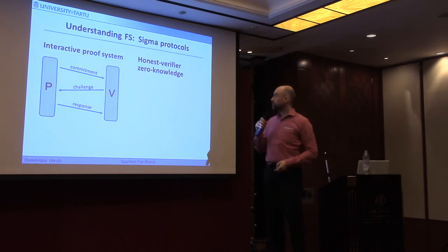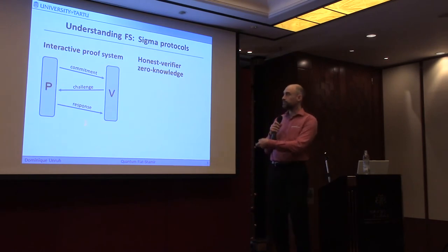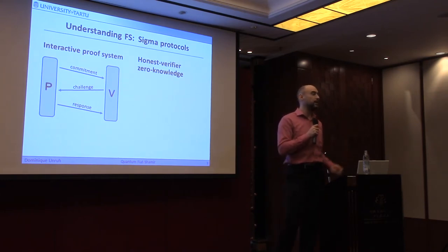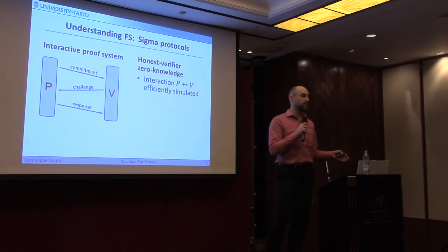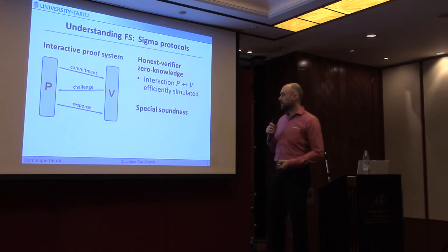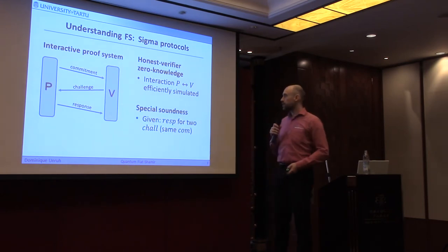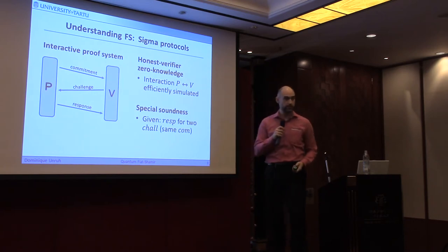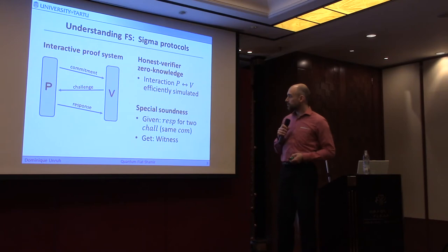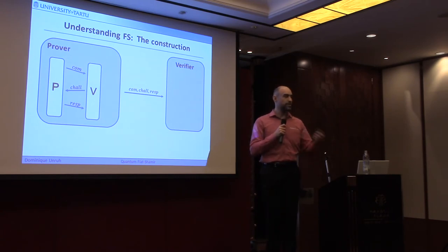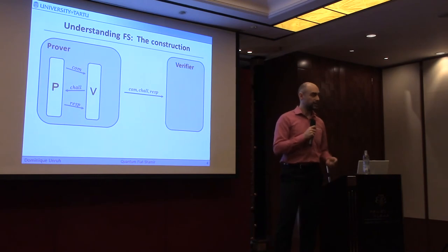We require two properties of such a proof system. The first is honest verifier zero knowledge, meaning whatever happens between an honest prover and verifier could be efficiently simulated by a simulator that has no access to the witness whatsoever — intuitively meaning you don't learn anything from seeing such an interaction. Secondly, one usually requires special soundness, meaning that given a valid response for two different challenges but the same commitment, you can efficiently compute the witness. These two properties together allow us to construct a non-interactive proof system using Fiat-Shamir.